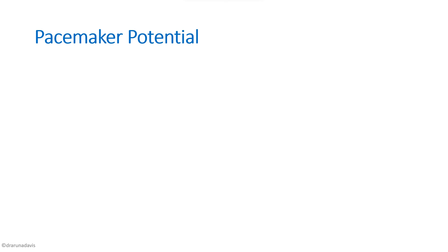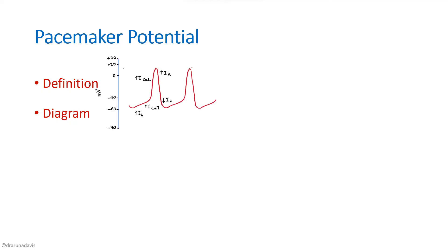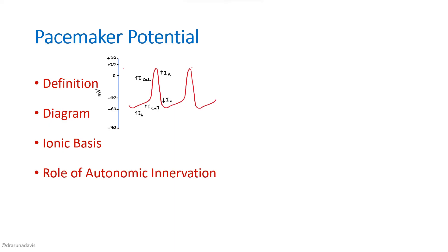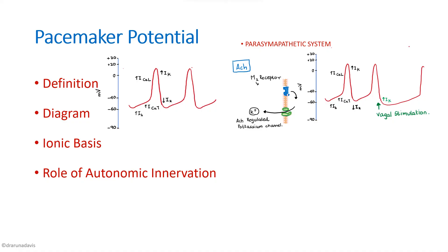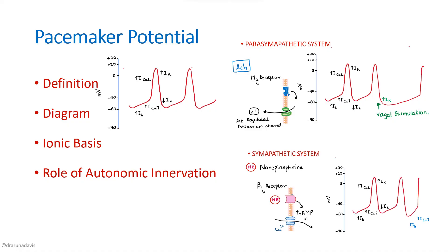To summarize the answer structure: start with a definition, then draw the diagram showing the different currents, then write the ionic basis, then discuss the role of autonomic innervation covering both parasympathetic and sympathetic mechanisms, and finally include the applied aspects. I hope this concept is clear. Thank you.